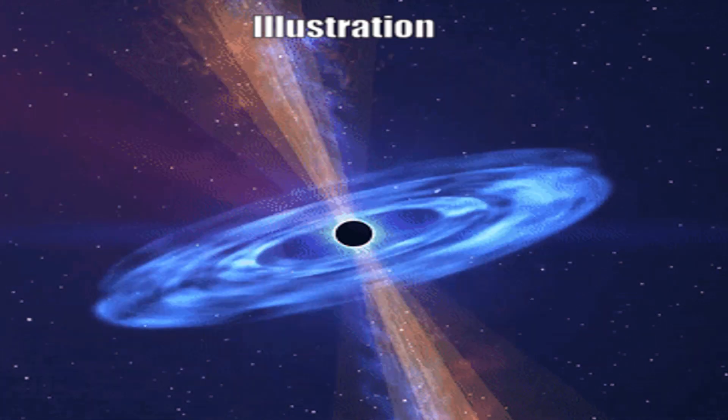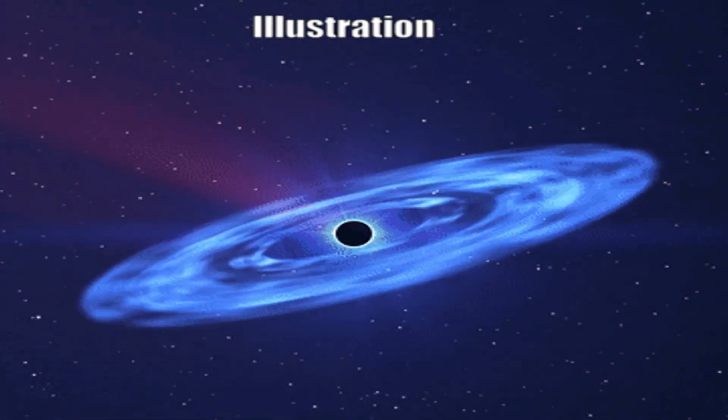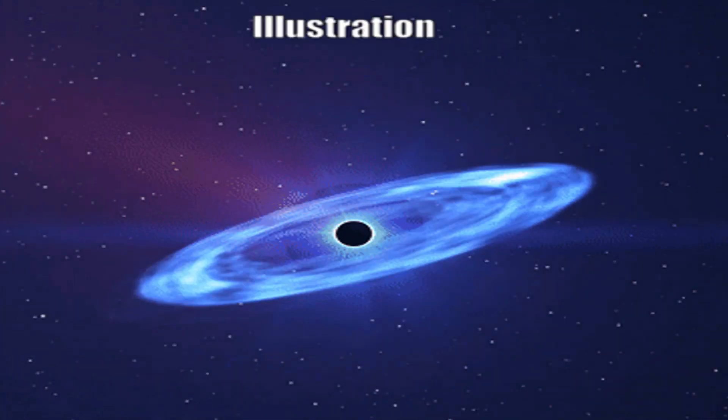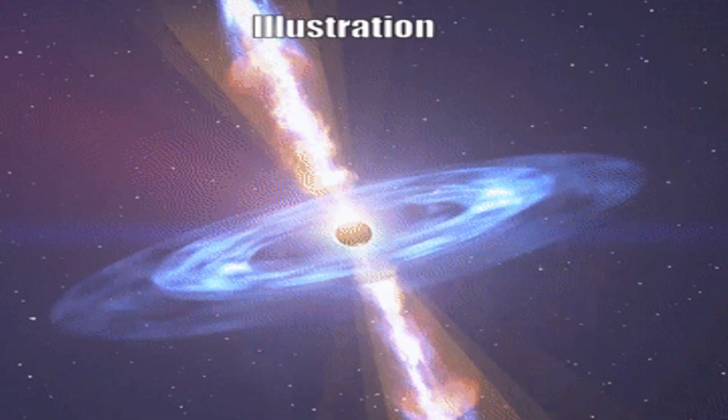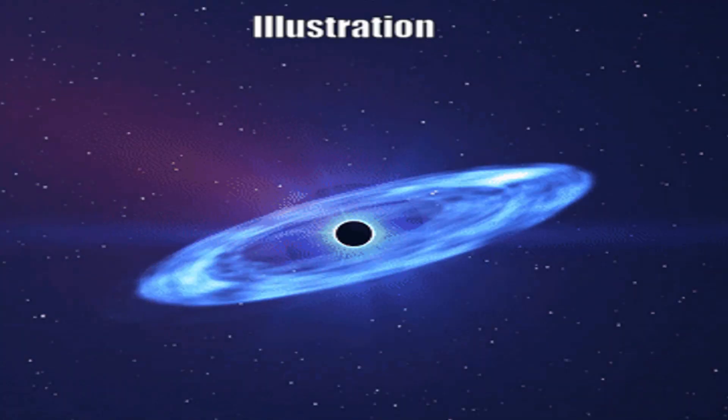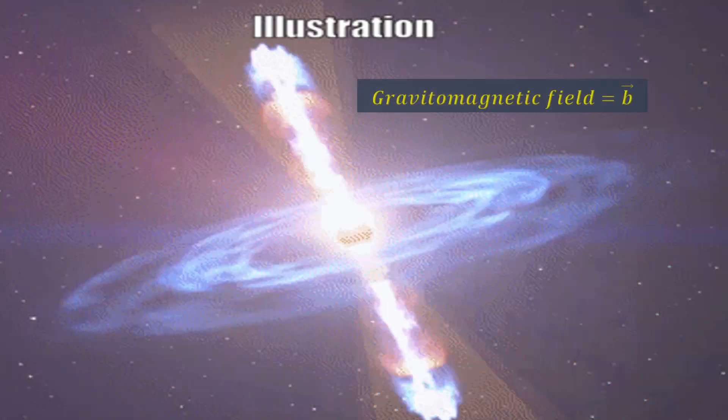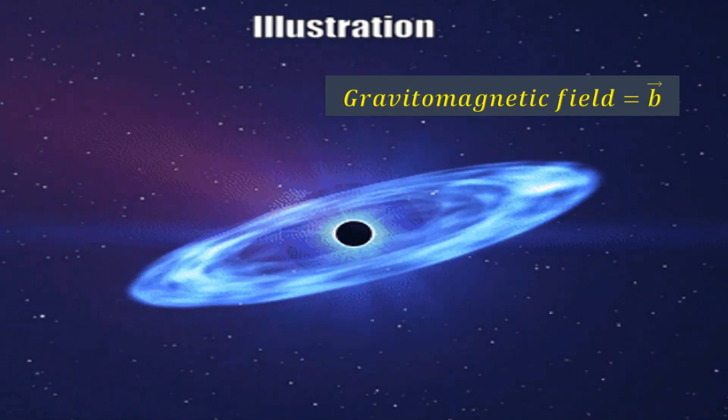Since these magnetic effects have already been observed, it is therefore okay to say that moving masses produce some kind of magnetic field around them, and we shall represent this field with lowercase b.